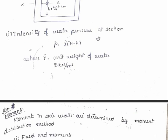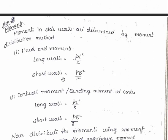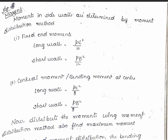Now intensity of water pressure at this section. So this is section XX. Here the intensity of water pressure is calculated as P equals gamma into (H minus h). Here gamma is the unit weight of the water. We are considering it as 10 kilonewton per meter cube.